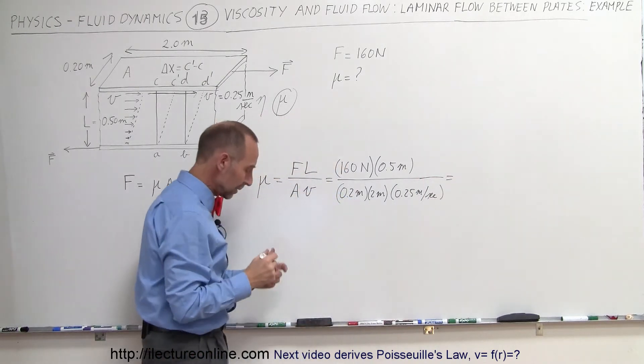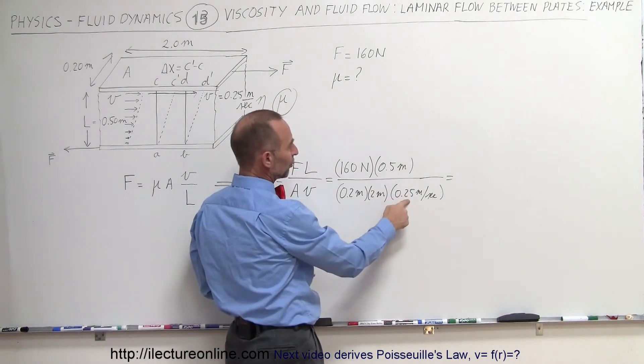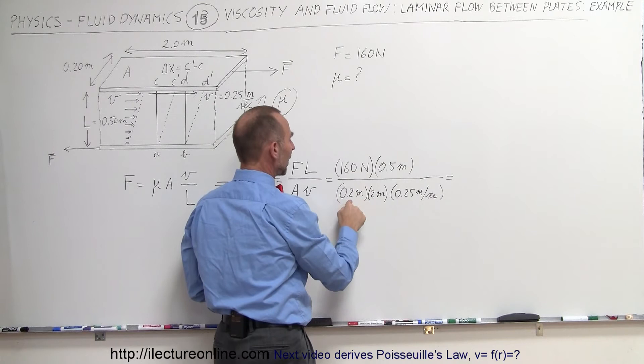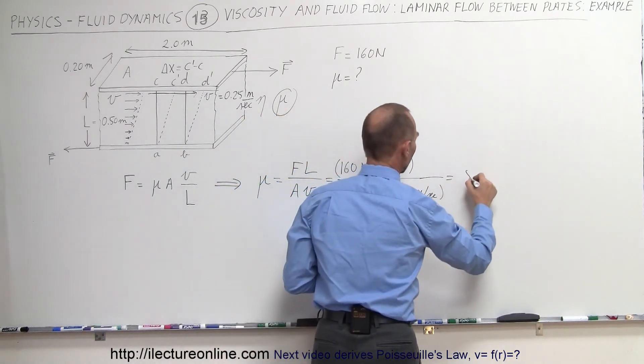What is this equal to? Well, let's see: 0.5 divided by 0.25, that's 2; 2 divided by 2 is 1; and 160 divided by 0.2 would be 800. So it would be 800 Newtons.